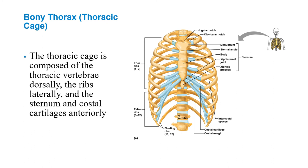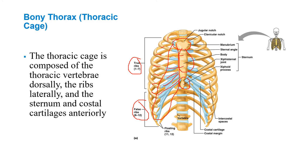The bony thorax includes the ribs and sternum. The sternum — the breastbone — has three parts: the manubrium, the body, and the xiphoid process. The ribs connect to the sternum via the costal cartilage at the costal chondral junction. True ribs are ribs one through seven — they connect directly to the sternum. Ribs eight through twelve are false ribs, going to the large costal chondral junction. Ribs eleven and twelve are floating ribs.